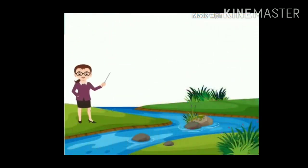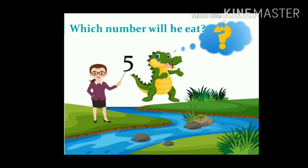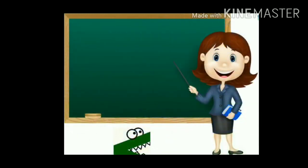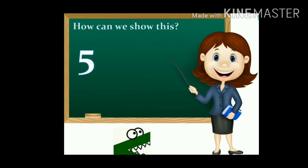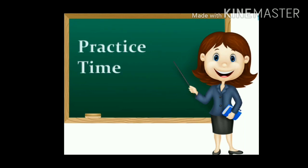Students, which number will the crocodile eat? The crocodile always eats the big number. Five or nine — which number? Nine! Nine is the big number, so the greater number is nine and the crocodile eats nine. How can we show this? See now — five and nine — which is greater? This is the crocodile's mouth. The crocodile always eats the big number, so nine is the big number.